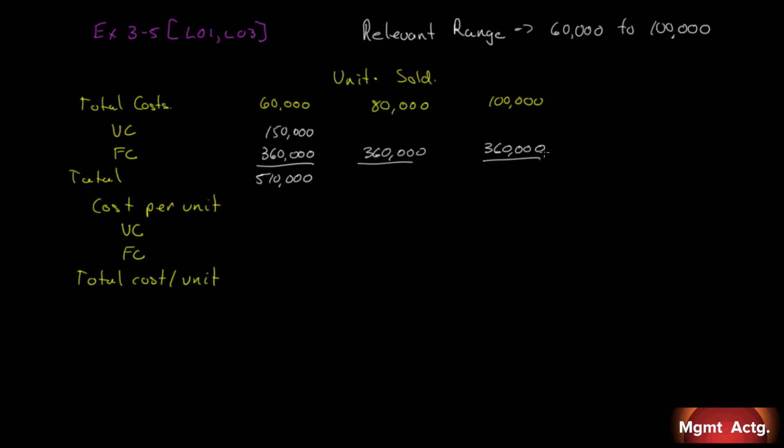The next thing we want to recognize is we sold 60,000 units. It cost us 150. If we do the math, we'll find that variable cost per unit is $2.50. 150 divided by 60 is 250.